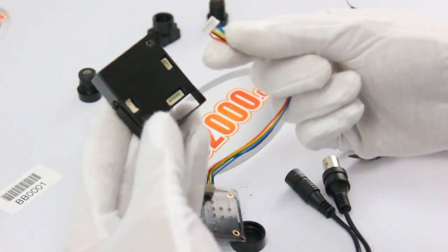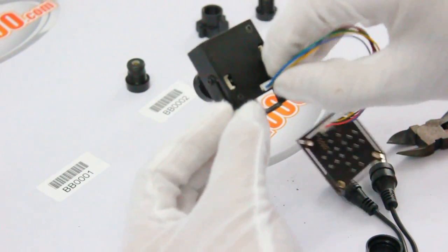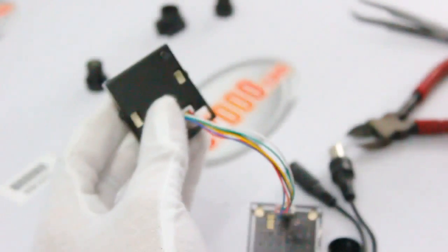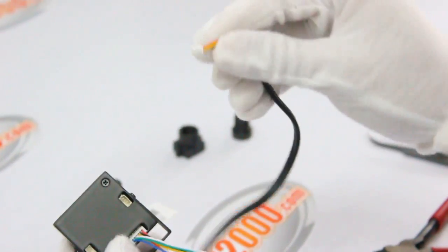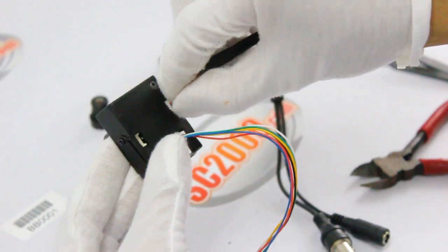One last thing to do is plug the cables back to the camera. Now let's connect the OSD board with camera and then plug the power and video cable back.